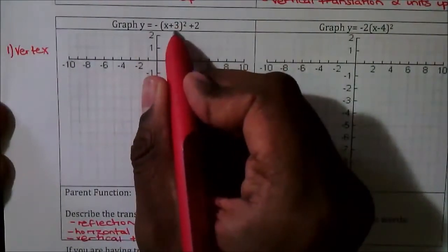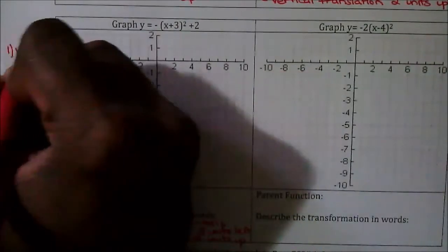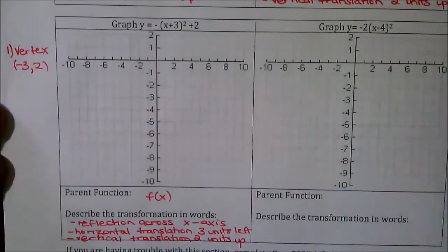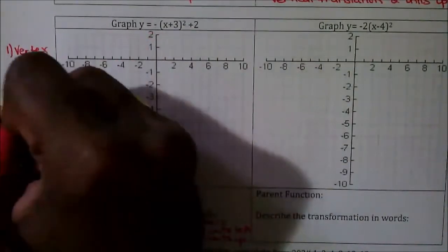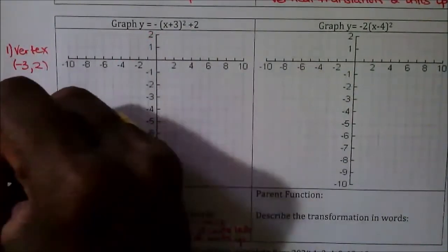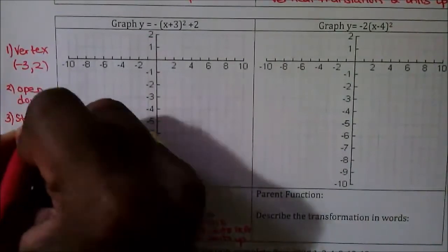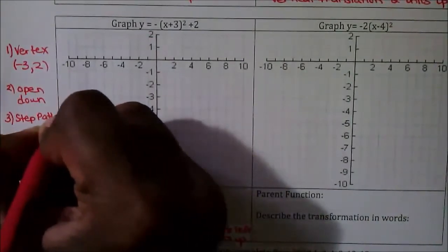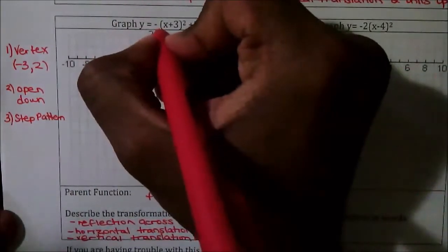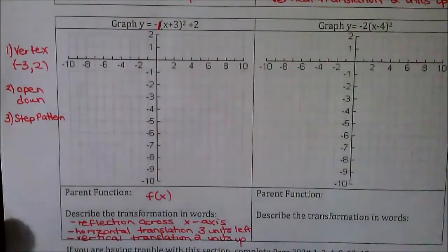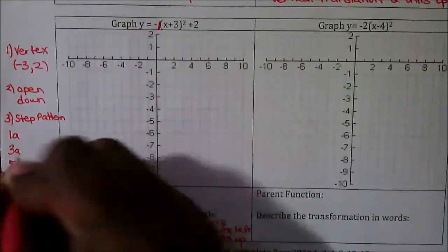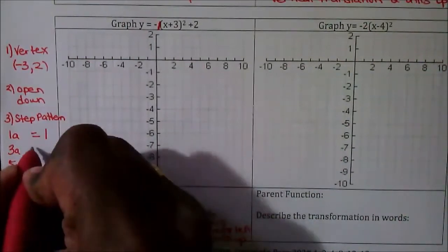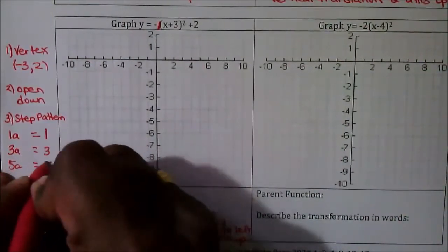When graphing, you want three pieces of information. The vertex: our h value is positive 3, so we take the opposite — negative 3 — and k value is 2 as-is, giving vertex (−3, 2). Because we have a negative out front, it's going to open down. For the step pattern, there's no number in front of the bracket so a = 1, giving 1a, 3a, 5a = 1, 3, 5.